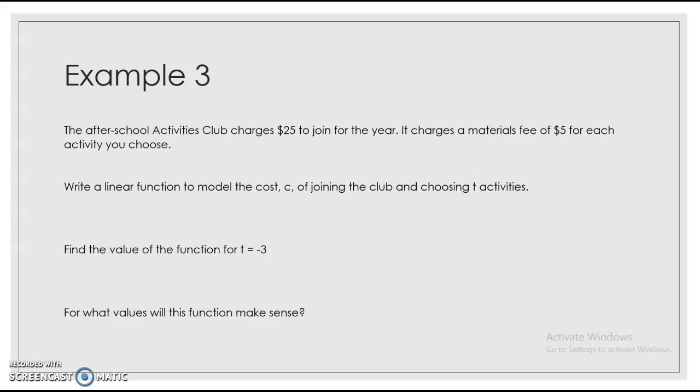All right. Example three, the after school activity club charges $25 to join for the year. So that's a one-time fee for that year, right? Or a yearly fee. And then it charges a materials fee of $5 for each. And that's our keyword right there, activity that you choose. So that for each is telling us that we have a slope. For each, for every, those things mean slope. Those keywords mean slope.